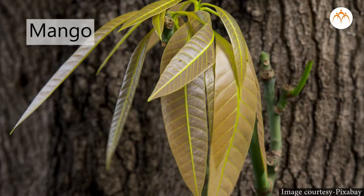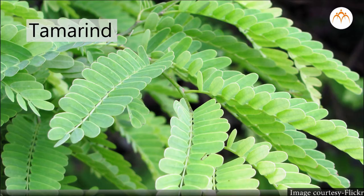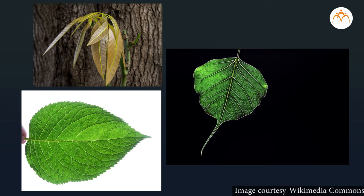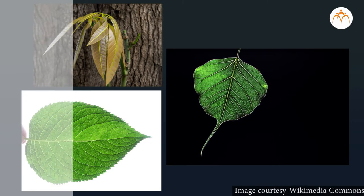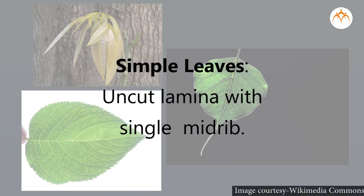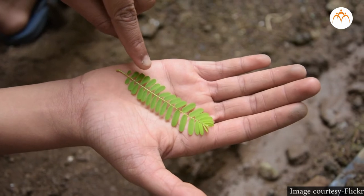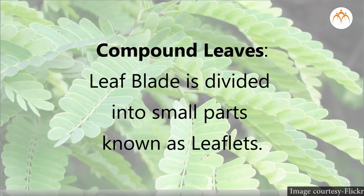You have seen a variety of leaf shapes. Now observe some examples: mango, hibiscus, peepal, rose, curry leaves, and tamarind. In mango, hibiscus, and peepal, the leaf blade or lamina is a single continuous, uncut surface with a single midrib — these are called simple leaves. In rose, curry leaves, and tamarind, the leaf blade is divided into many small leaves called leaflets. These are called compound leaves. So there are two types of leaves: simple and compound.